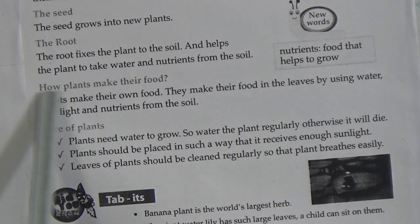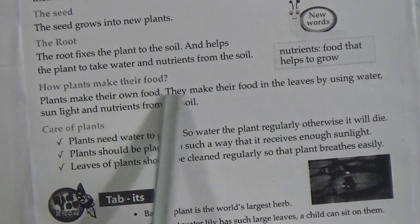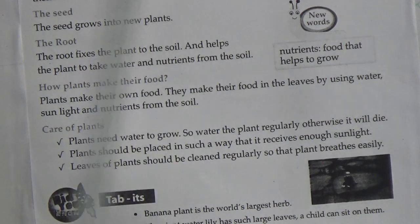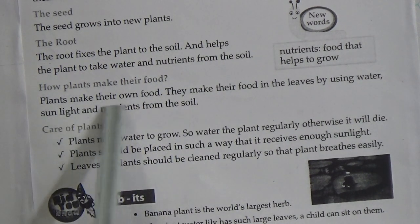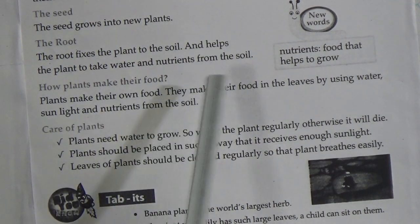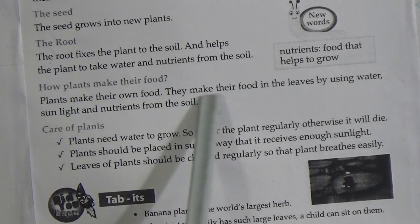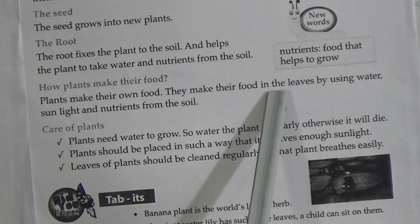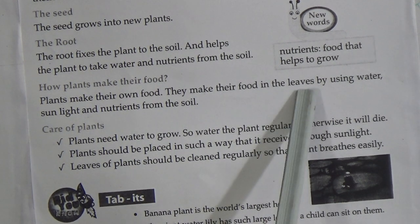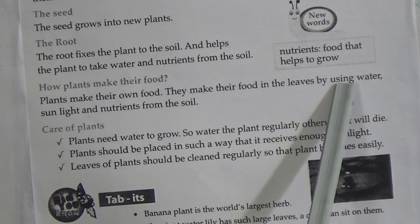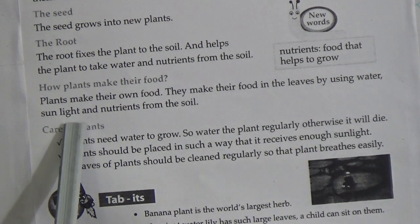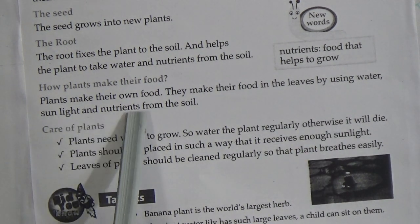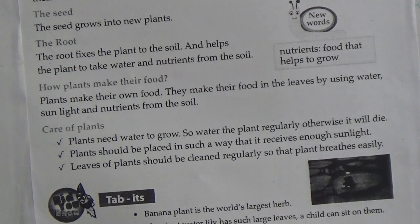How do plants make their food? Plants make their food in the leaf by using water, sunlight, and nutrients from the soil.